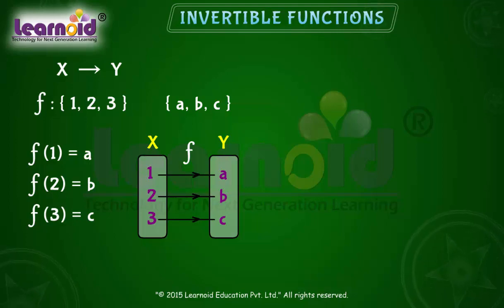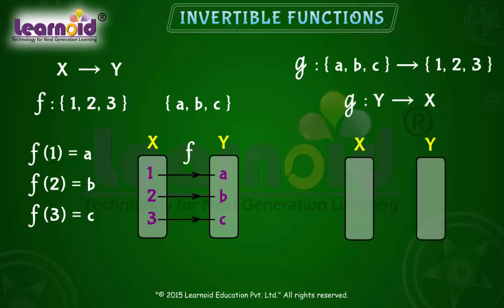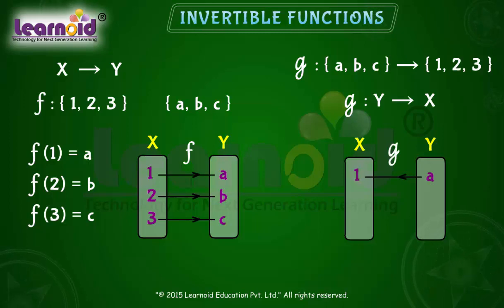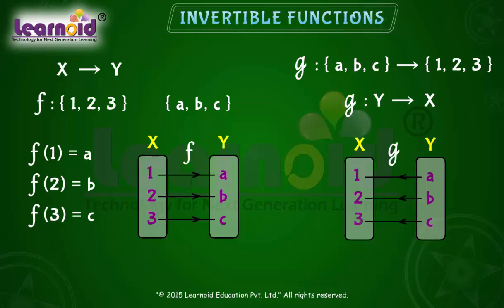There exists a function g from {a, b, c} to {1, 2, 3} such that g(a) = 1, g(b) = 2, and g(c) = 3.